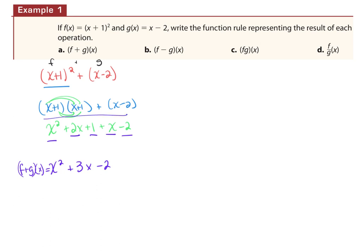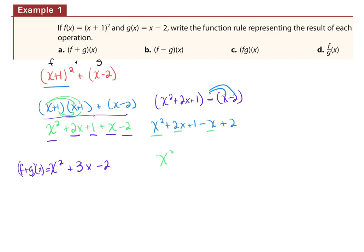For subtraction, you'd get to x squared + 2x + 1 minus (x − 2). With subtraction, watch out for that negative — it applies to the entire group. So distribute it: x squared + 2x + 1 minus x plus 2. Then combine like terms: 2x and −x, and 1 and +2.